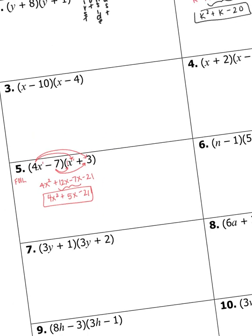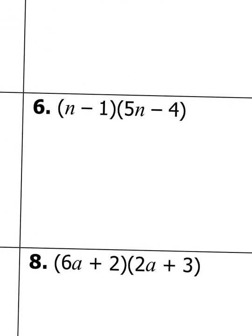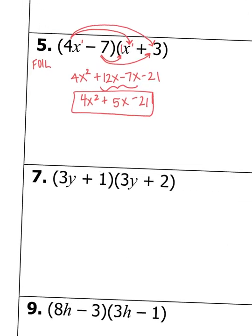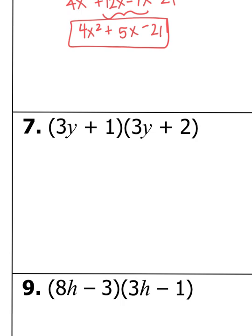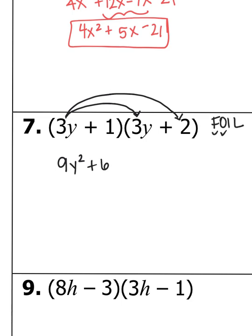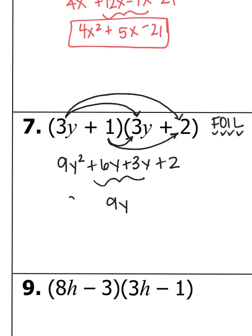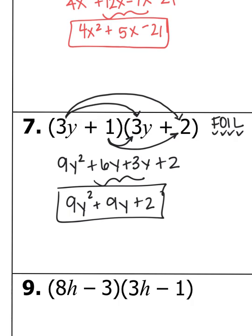I'd like you to try number 6 on your own. Now I'm going to do number 7: 3Y plus 1 times 3Y plus 2. First: 3Y times 3Y makes 9Y squared. Outside: 3Y times 2 is 6Y. Inside: 1 times 3Y is 3Y. Last: 1 times 2 makes 2. Combine the middle: 6Y and 3Y makes 9Y. So the answer is 9Y squared plus 9Y plus 2.